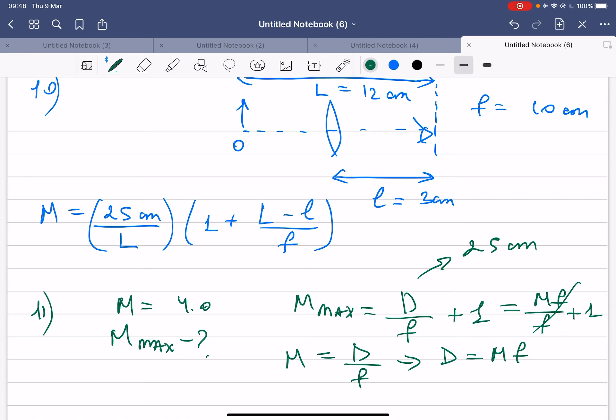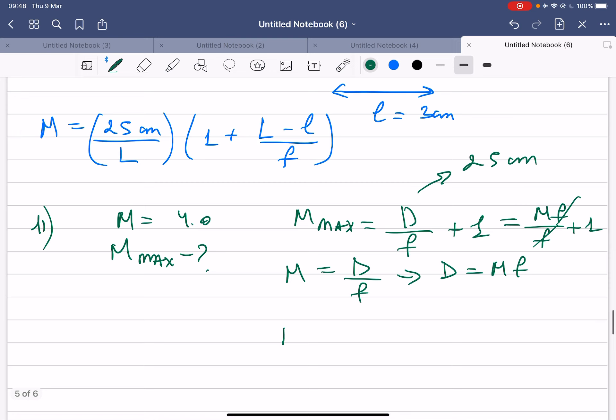So you will end up with M_max equals M plus 1, which is 4 plus 1, which is 5 times. Okay, the answer is 5.